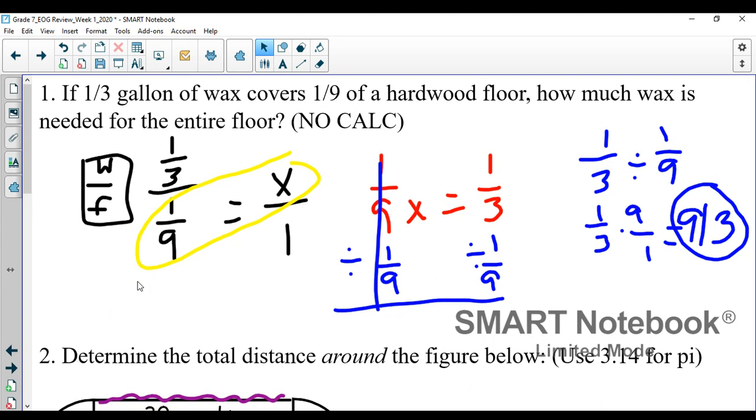Number one: If one-third of a gallon of wax covers one-ninth of a hardwood floor, how much wax is needed for the entire floor? The first thing we did is set up a ticket: wax to floor, one-third gallon of wax to one-ninth of the floor. How much wax is needed for the entire floor? The entire floor is one, so once I have my ticket set up, the rest is pretty procedural and simple.